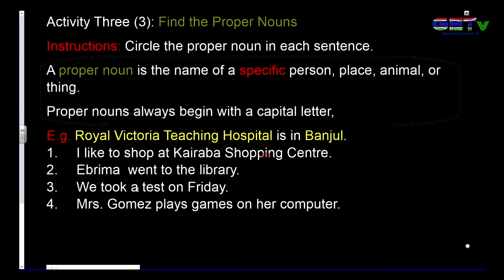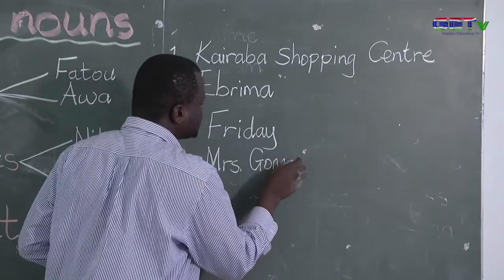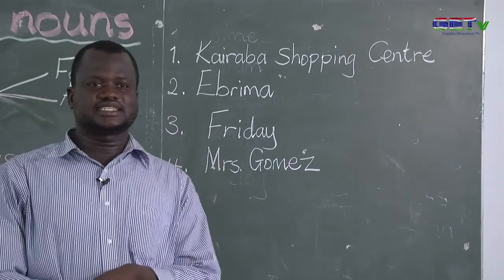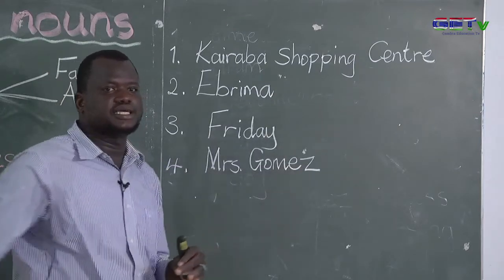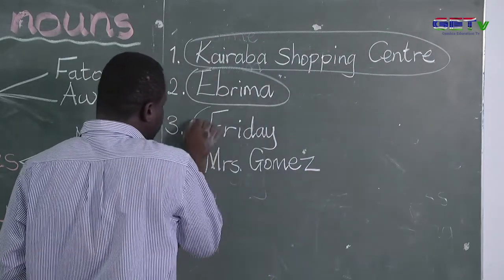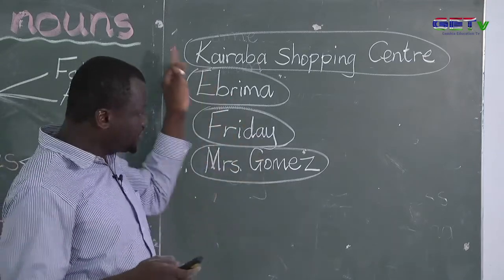All these nouns should be circled — remember, the instruction says we circle them. So in the sentences, circle the proper nouns. These are the proper nouns in these sentences.